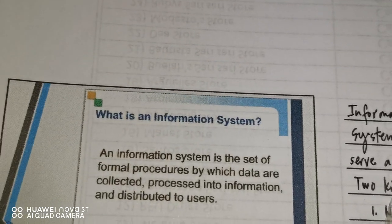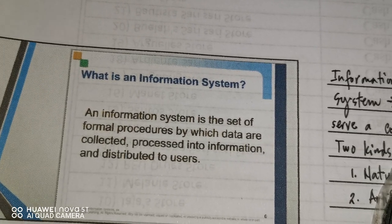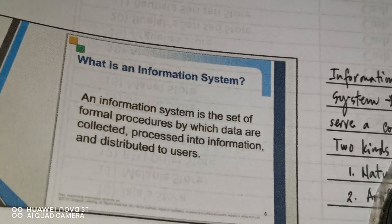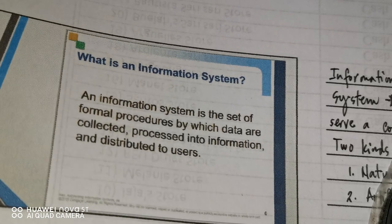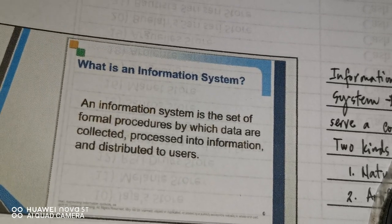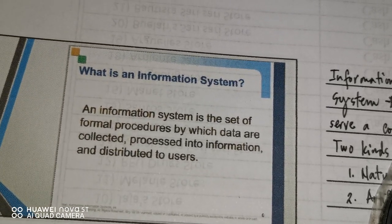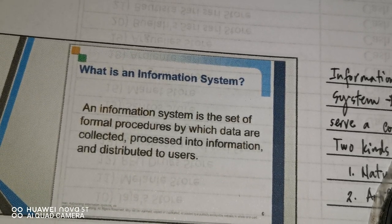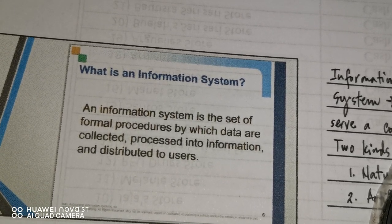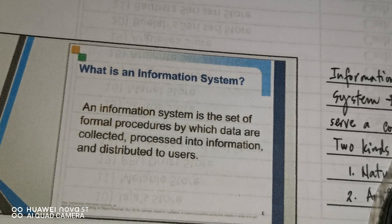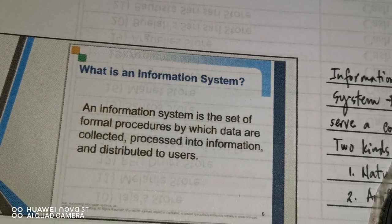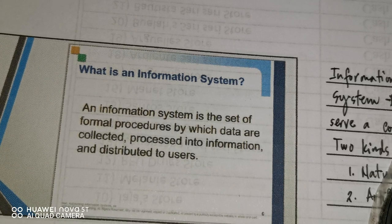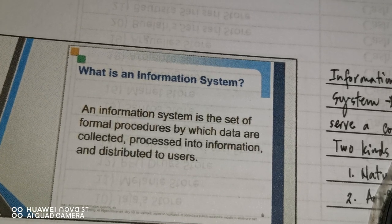An information system is the set of formal procedures by which data are collected, processed into information, and distributed to users. This sounds familiar because when you look at the definition of accounting, you will see the same elements: collection, processing of information, and distributing to users.